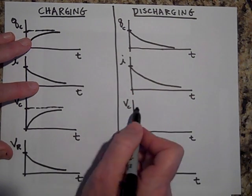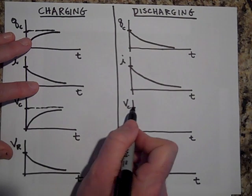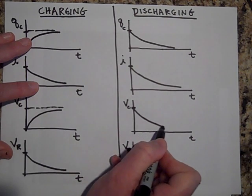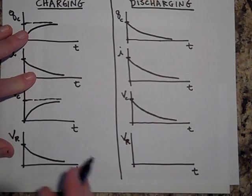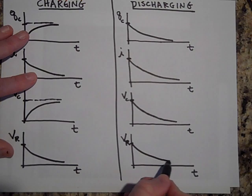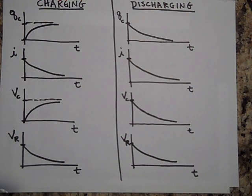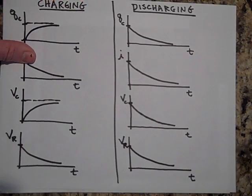So is the voltage across the capacitor because the charge is depleting, the voltage should be depleting. And if the I is depleting, so should the voltage across the resistor. Everything's depleting or decaying in a discharging capacitor.